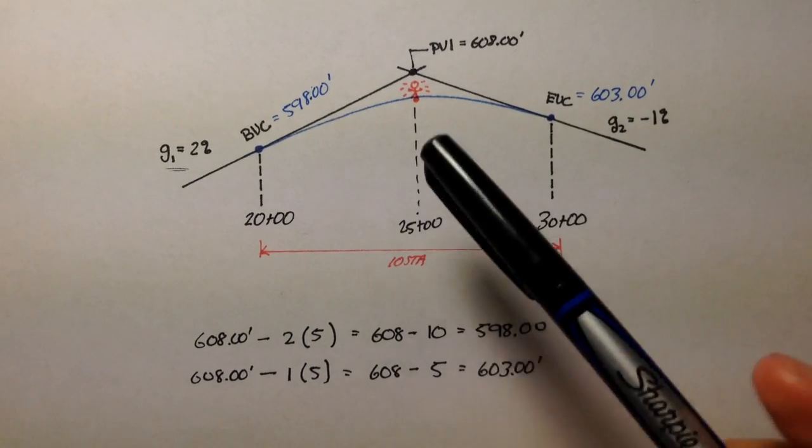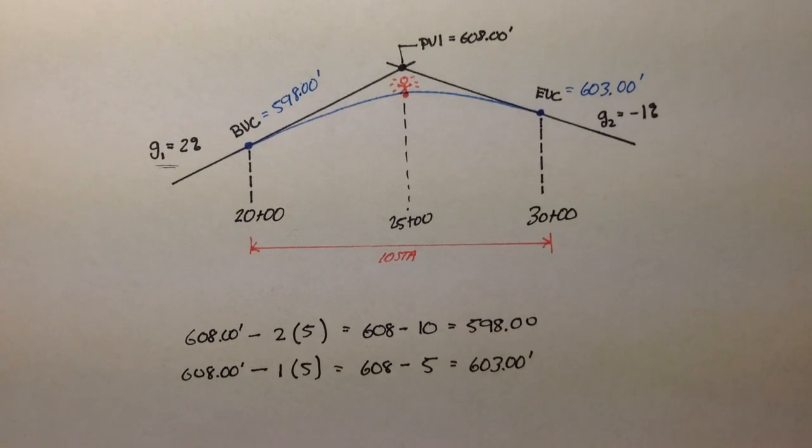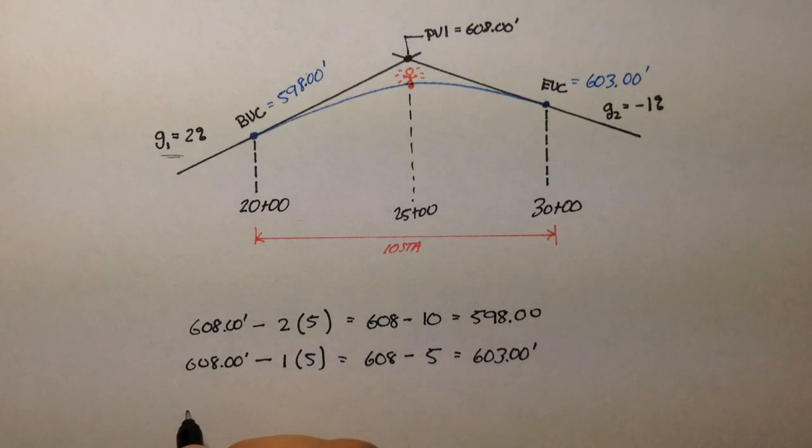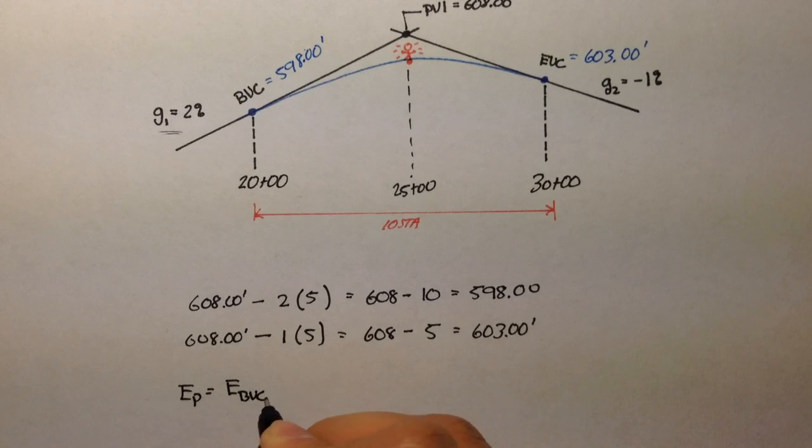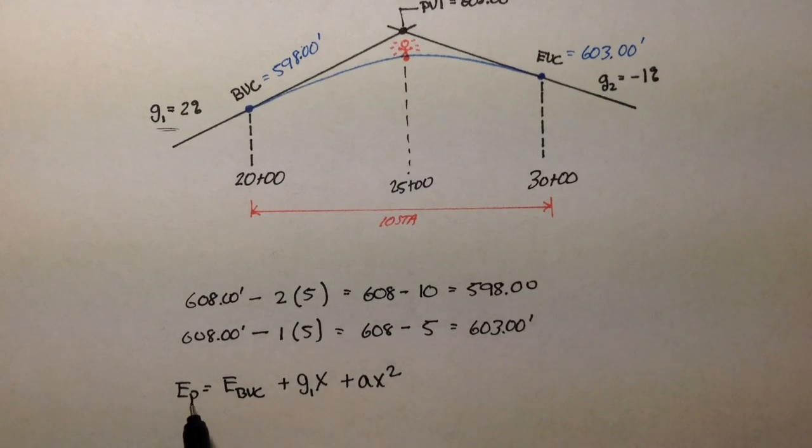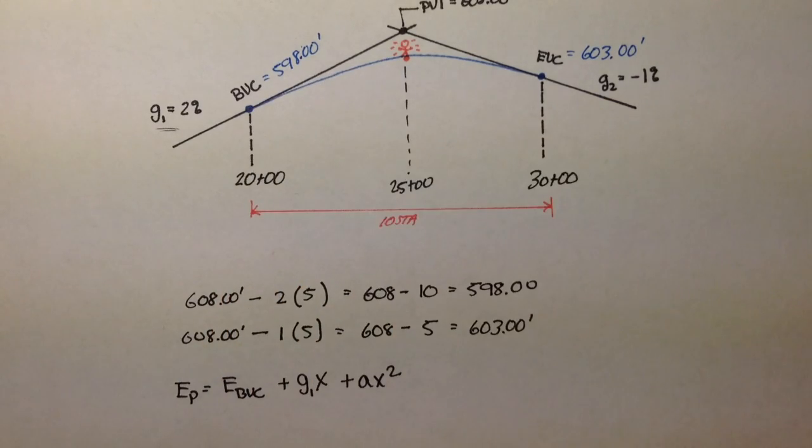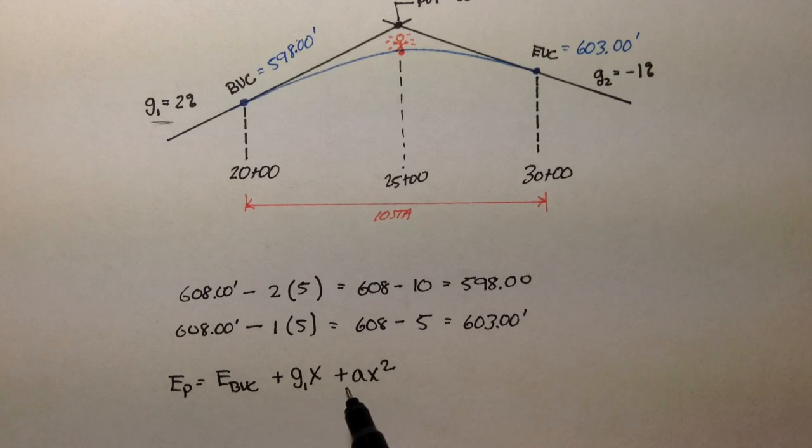Let's say I was standing at that point right there. We want to figure out what the elevation of that point is along this vertical curve. We discussed in the last several videos, we have an equation for that. The equation is EP equals EBVC plus the entering tangent grade times the distance X plus AX squared. EP is the elevation of any point along this curve.